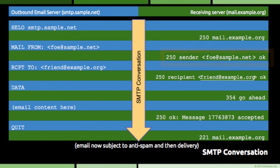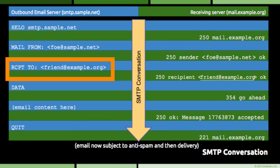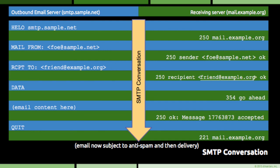Happy with this reply, the outbound server continues and tells the receiver about the recipient of the email. This is the RCPT TO command, and the example address is friend@example.org. Because of the pre-connection dance that was done prior to the SMTP conversation, the outbound server can expect the receiving server to accept email on behalf of the recipient domain — otherwise the outbound server wouldn't have connected to this receiving server. So the receiving server replies with 250 and confirms that the recipient is in fact okay.